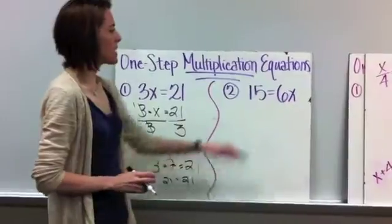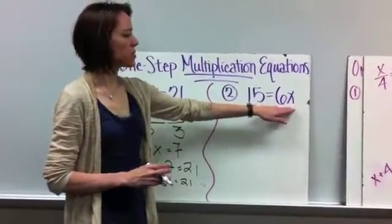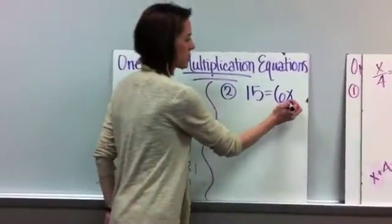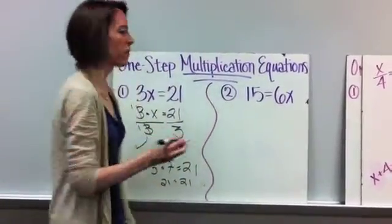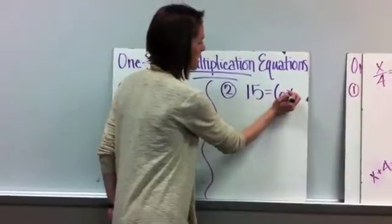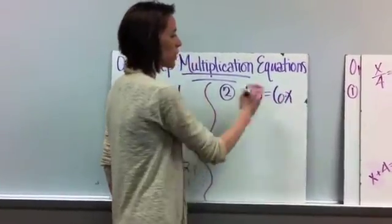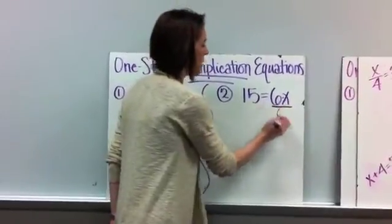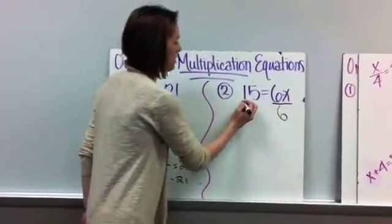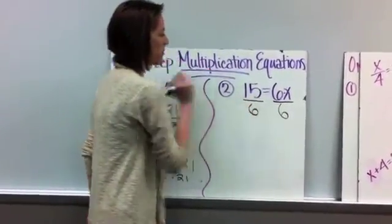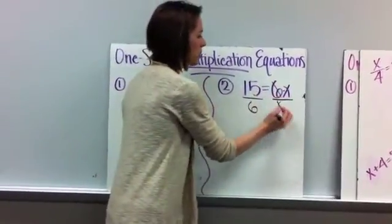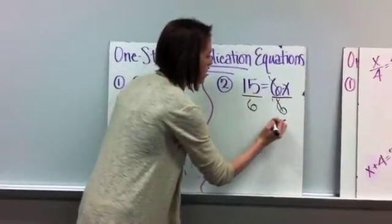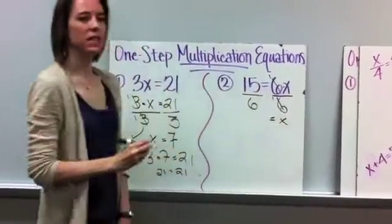Now, this one is exactly the same. The only difference is that the variable is on the right side of the equal side. But it doesn't change what you do. Your goal is still to get this x all by itself to isolate the variable. So same thing. We're multiplying here. This is 6 times x. So in order to get rid of multiplication, you do the inverse, which is division. So you divide this side by 6. And don't forget you need to divide this side by 6. So these 6s are going to cancel out to be 1. And we're left with just 1x on the top. And then we have 15 over 6.